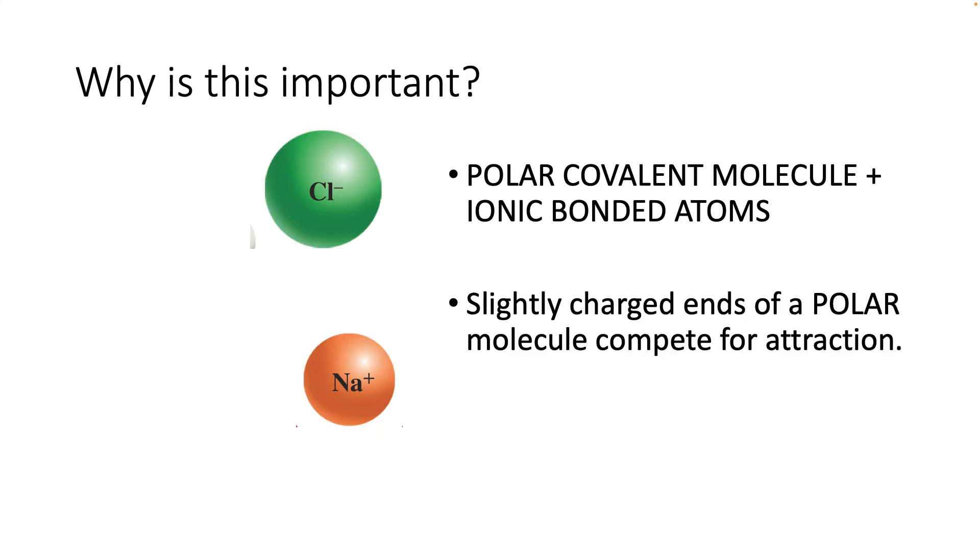So why is this important? In an ionic bond, the opposite charged ions are attracted to one another. Here you can see sodium and chloride eyeing each other. Sodium ion is positively charged and chloride ion is negatively charged. When they bond together and make an ionic bond, that makes table salt, NaCl.